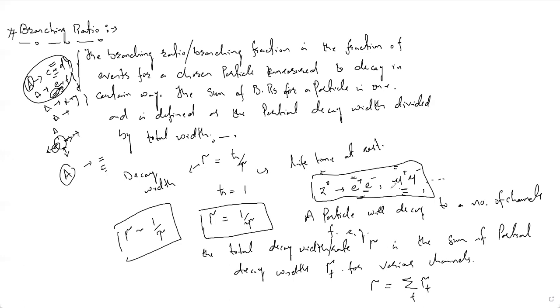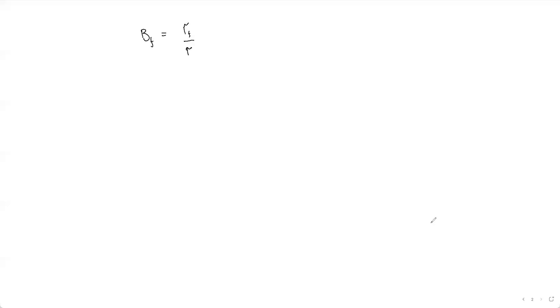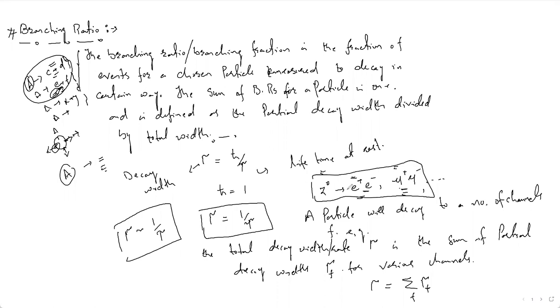The branching ratio for a particular channel f is given by: BR = gamma_f / gamma_total. For example, to calculate the branching ratio for Z-zero decaying to a particular channel, I calculate the decay width for that process and divide by the total decay width. That is what we call the branching ratio.